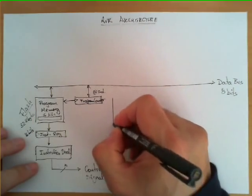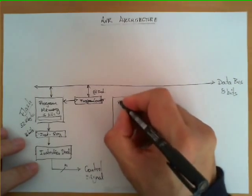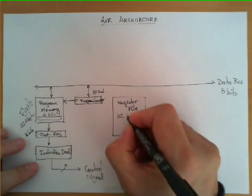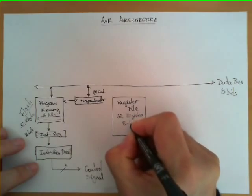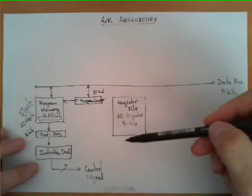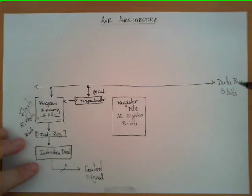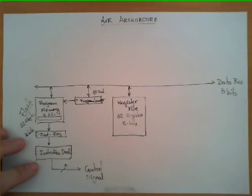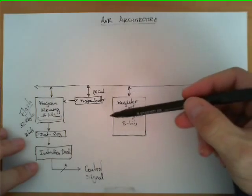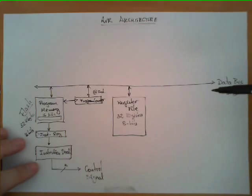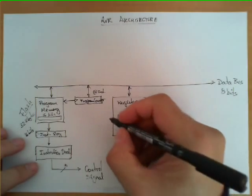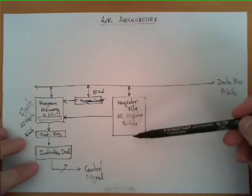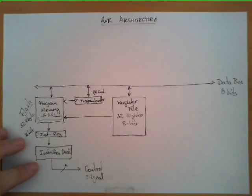Most of the instructions are going to store temporary operands in what we call the register file. The register file is composed of 32 registers and each one of them has 8 bits. This is where most of the temporary results of the instructions executed by this microcontroller are stored. This block has a connection to the 8-bit data bus. One special connection is between the register file and the program memory — in some cases we want to get data from the register file and use it as an address to access the program memory.